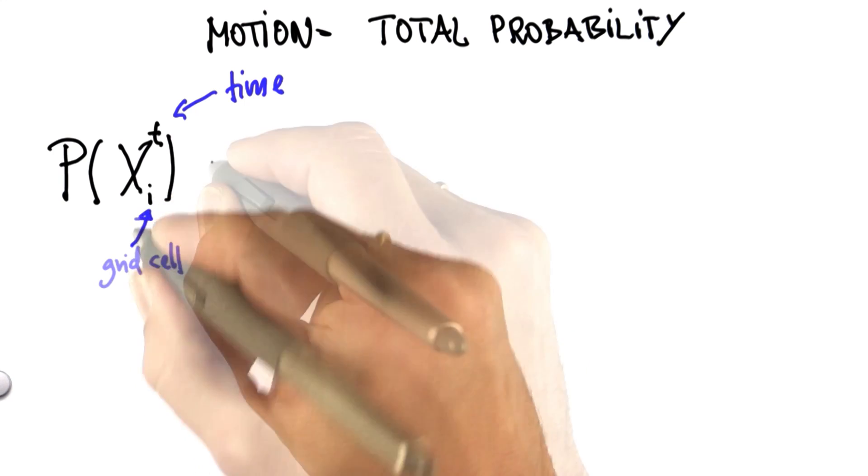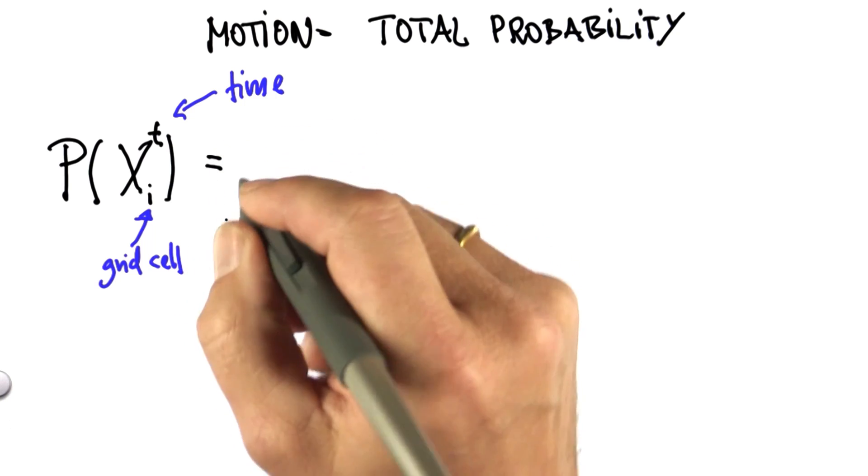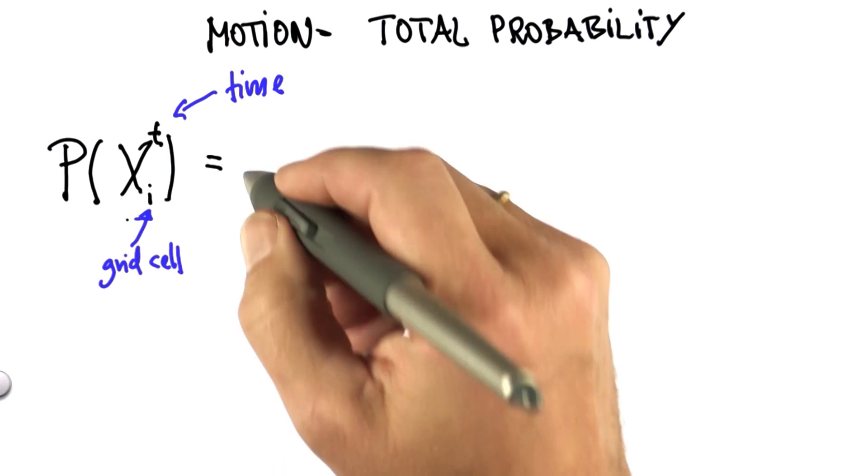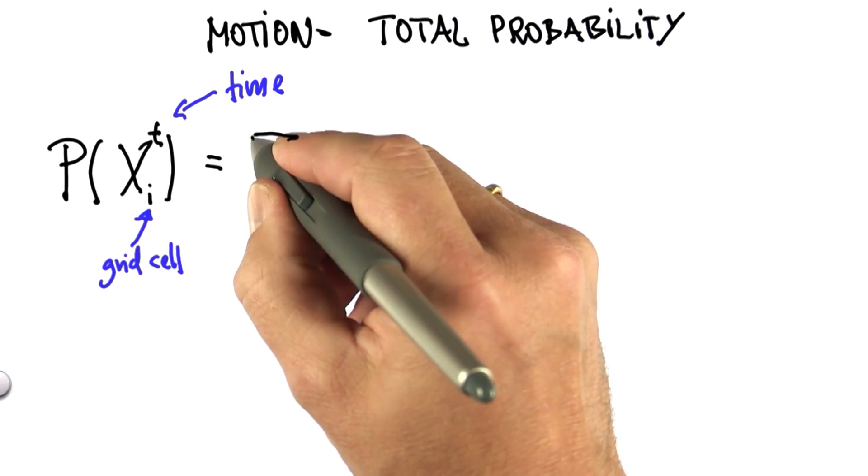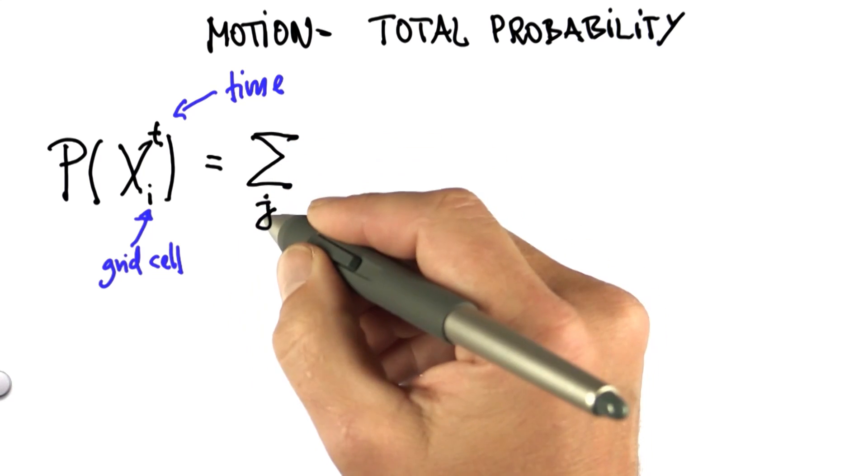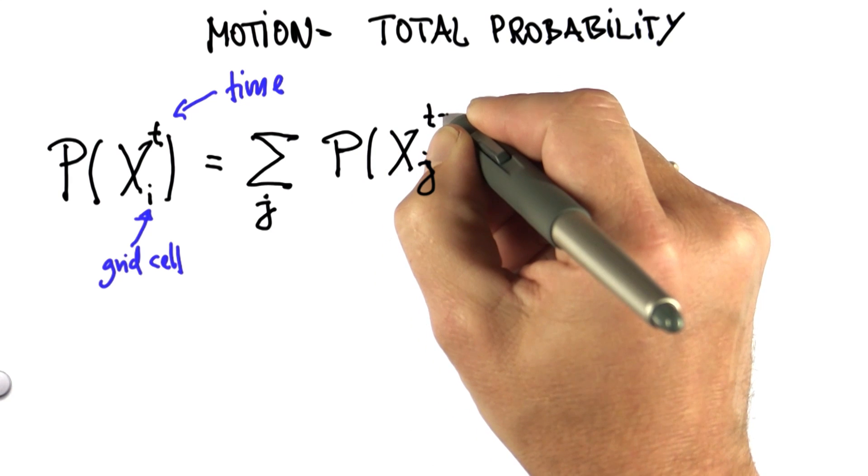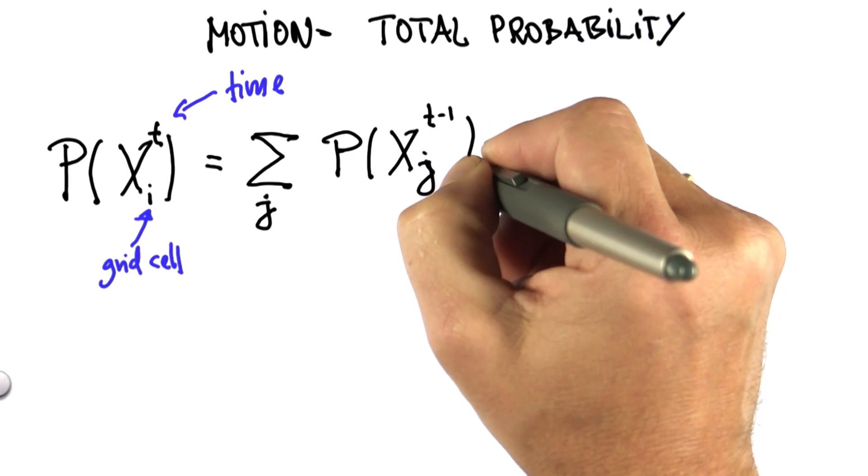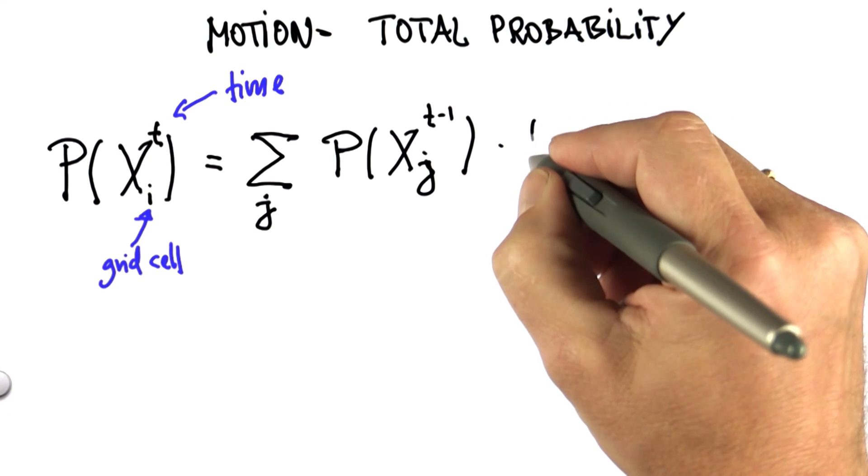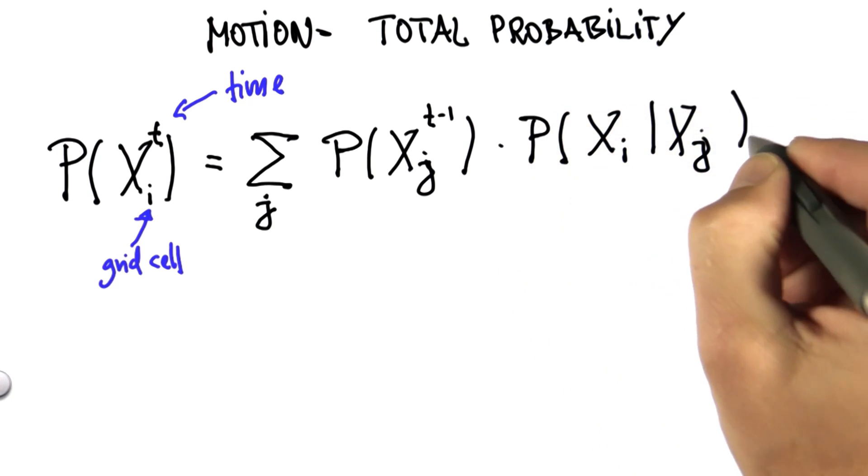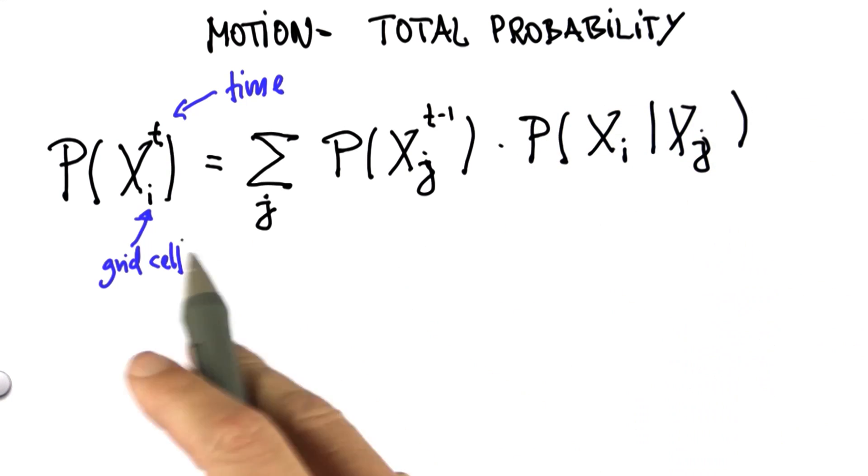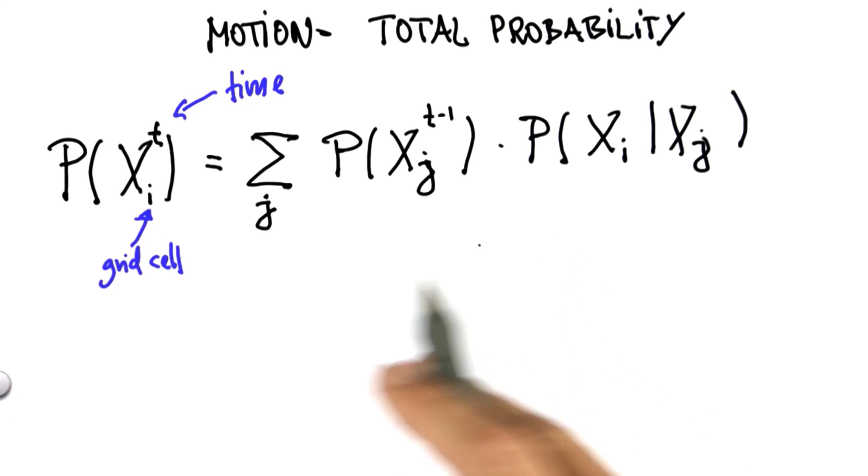You might remember the way we computed this was by looking at all the grid cells that would have come from one time step earlier, indexed here by j. We looked at the prior probability of those grid cells at time t minus 1, and we multiplied with the probability that our motion command would carry us from xj to xi. That's written as a conditional distribution as follows.